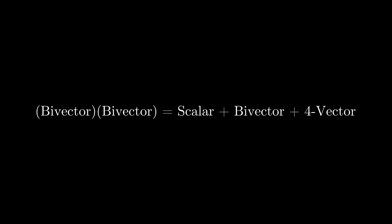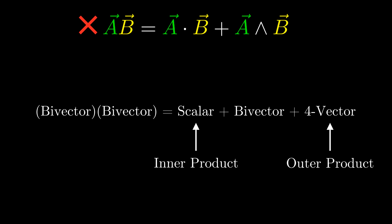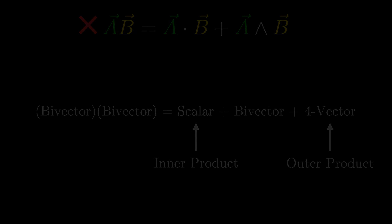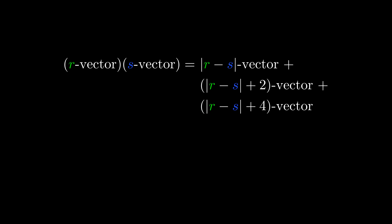We call the scalar part of this product the inner product, and we call the four-vector part the outer product. What we see here is that for bivectors it is not the case that their product is the sum of their inner and outer products, because there is an extra bivector term. This argument can be generalized: the product of an r-vector with an s-vector is an |r−s|-vector, plus an |r−s|+2-vector, plus an |r−s|+4-vector, and so on up to an (r+s)-vector. This formula is the most general way to decompose a product in geometric algebra.